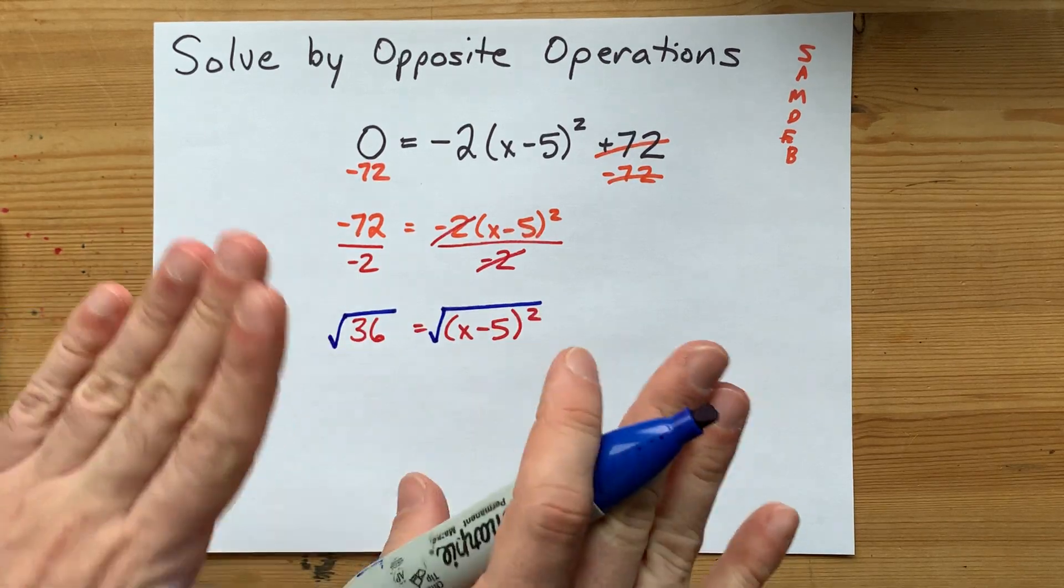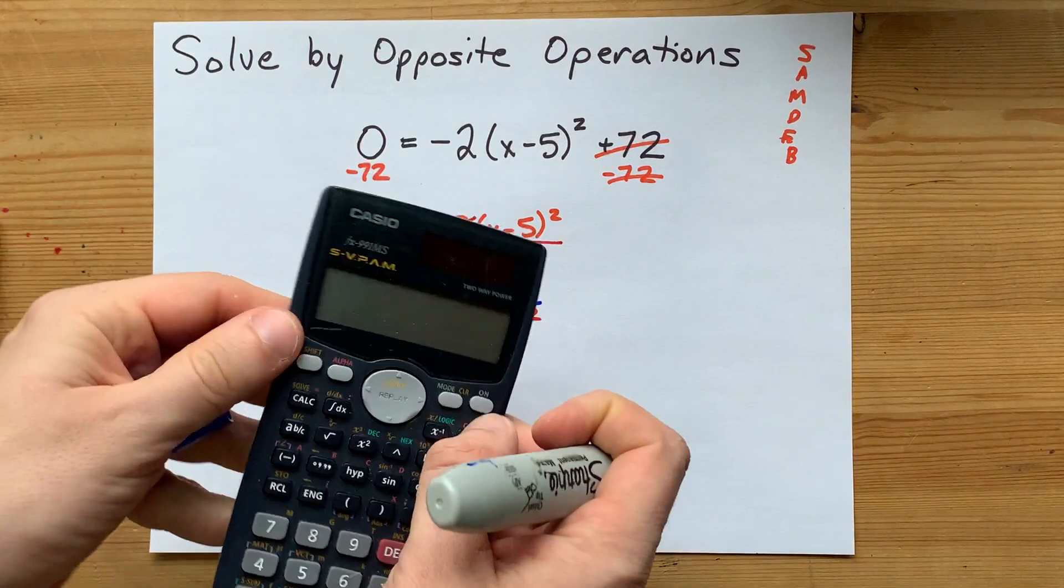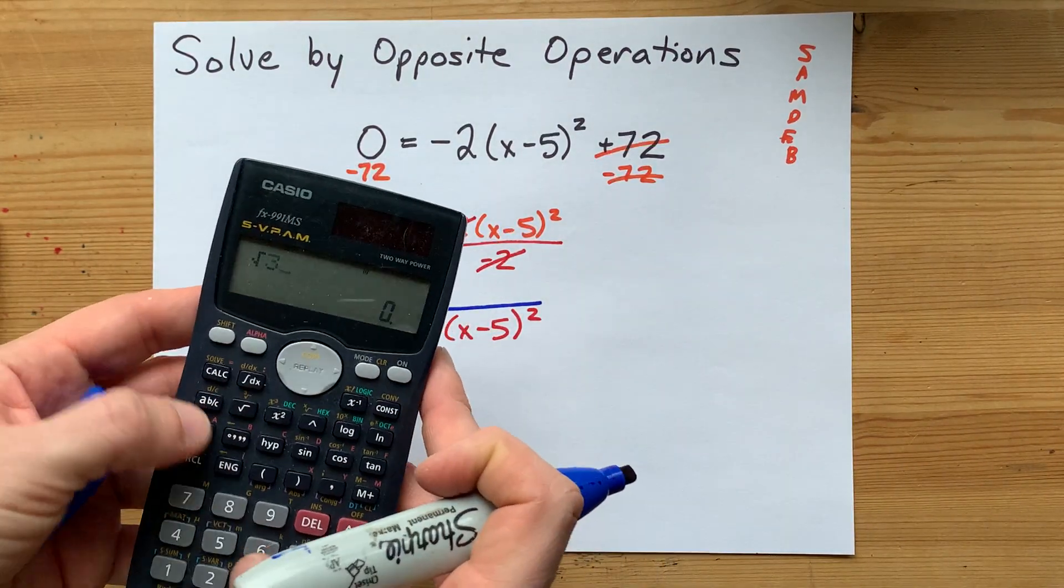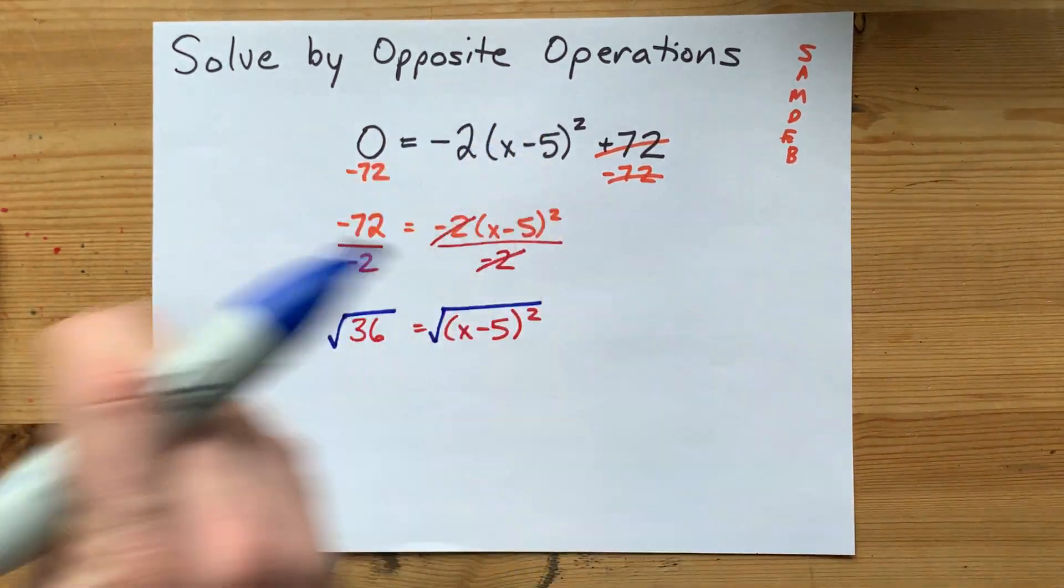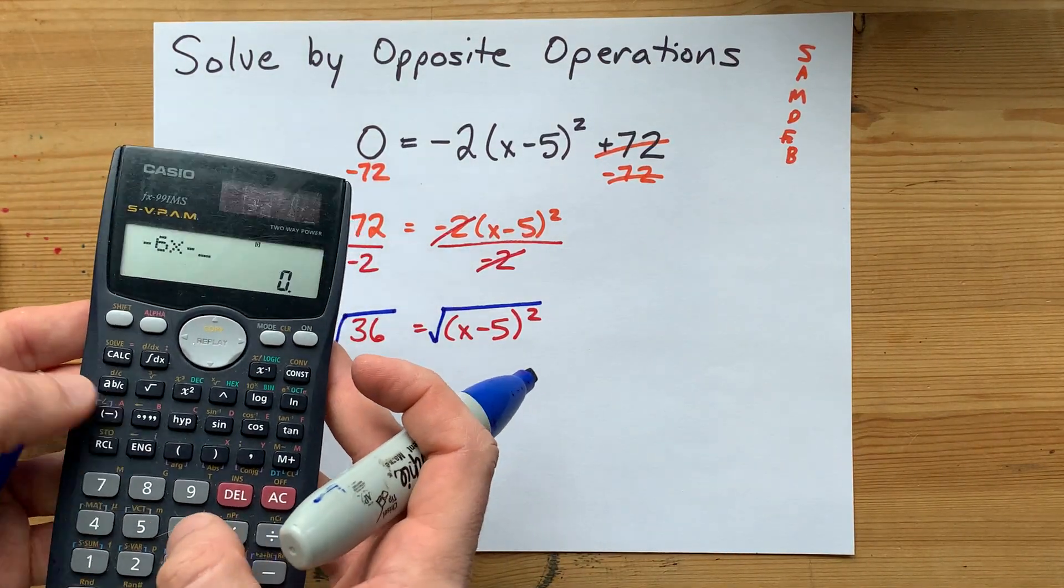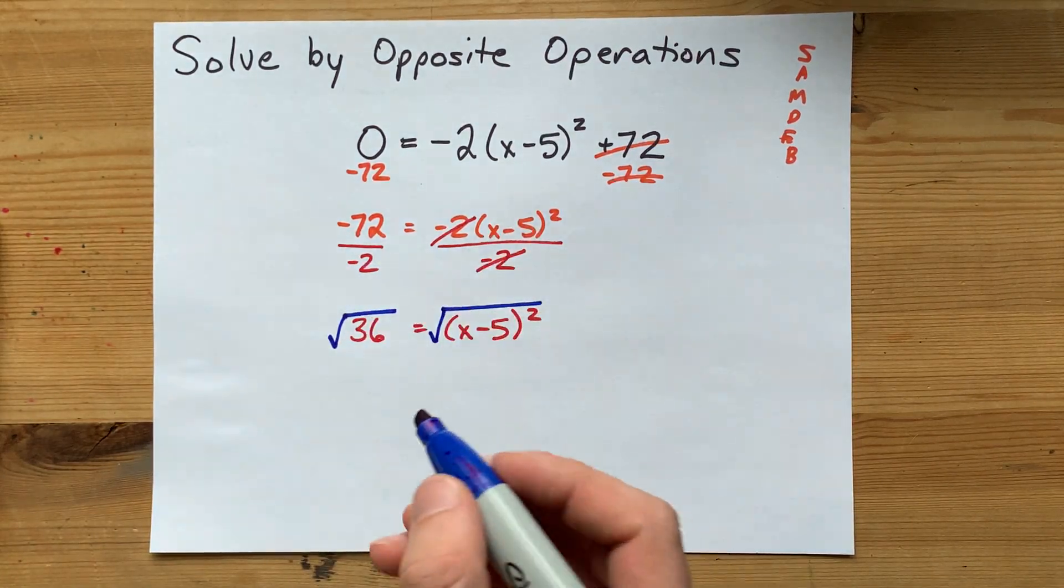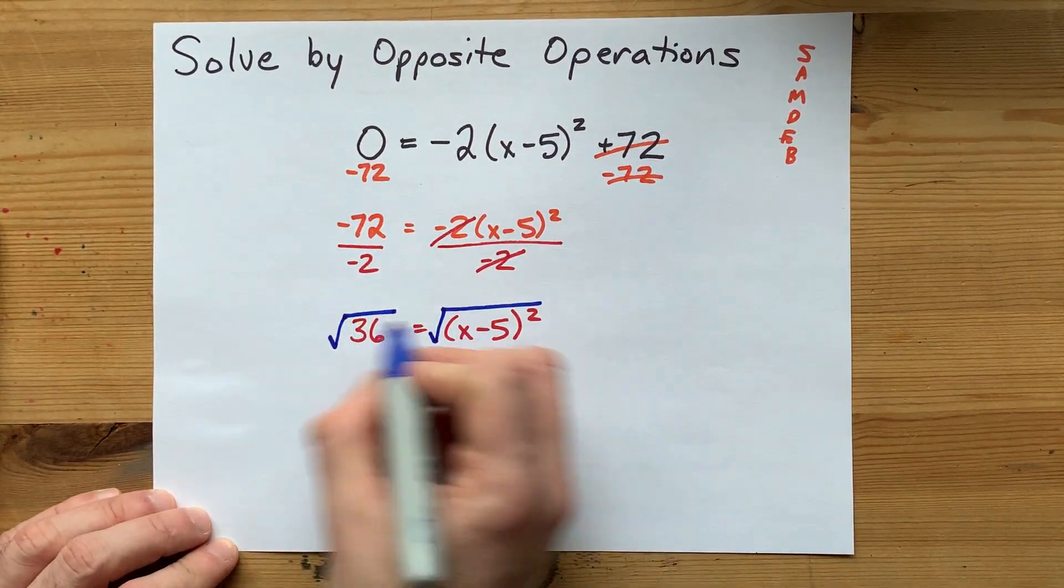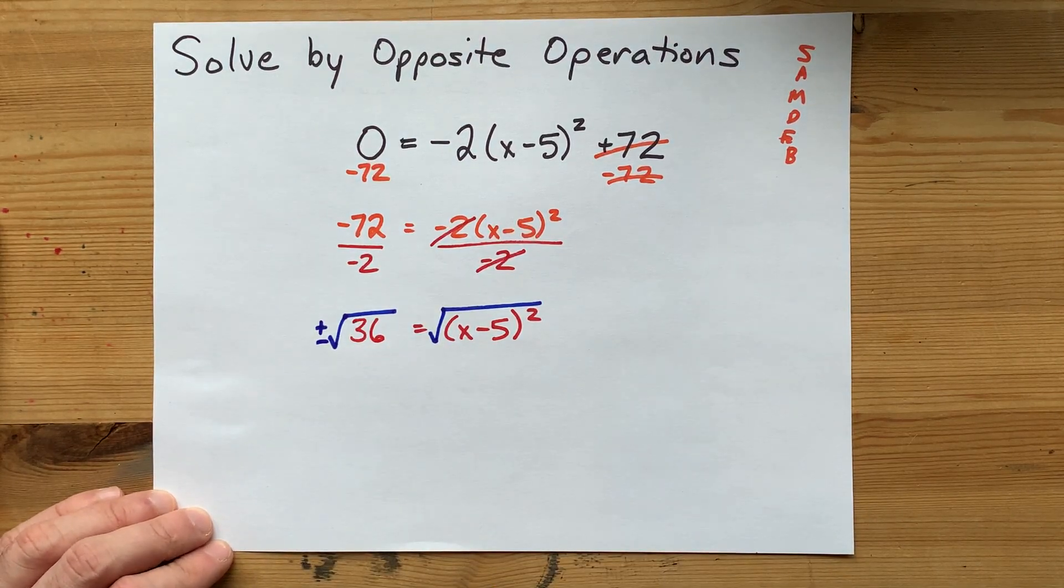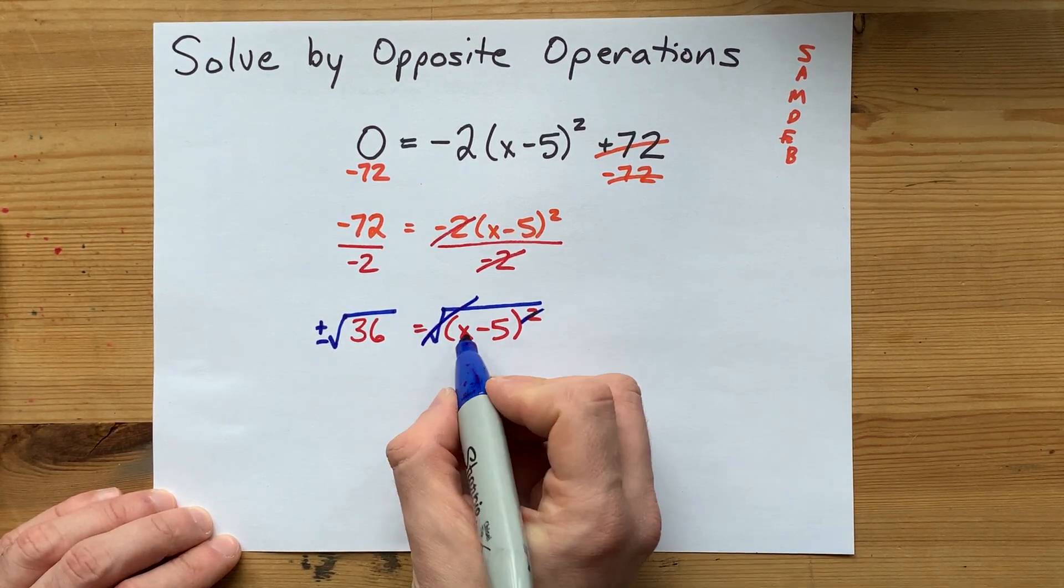Here's where the new stuff comes in for you. It used to be that when you take the square root of a number, and calculators will tell you this, the square root of 36 it will say is 6. But negative 6 times itself is also positive 36. The square root and square here cancel each other out. You're left with x minus 5.